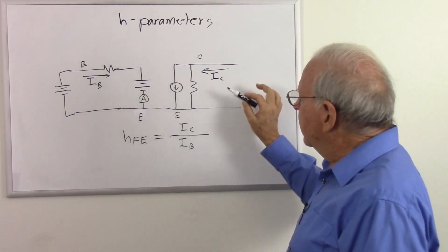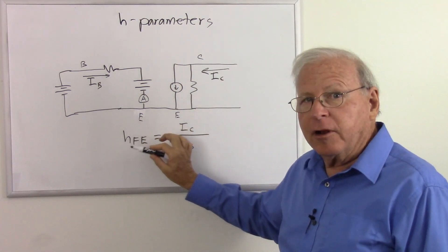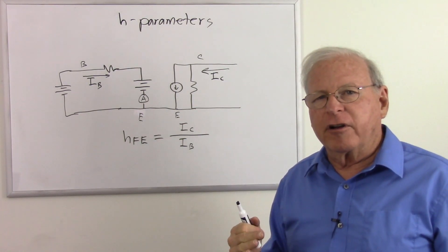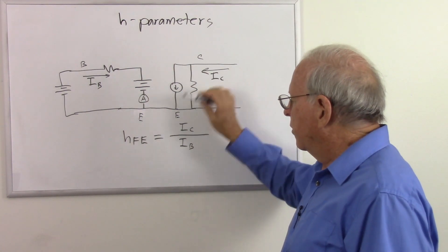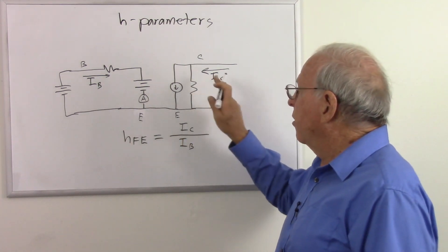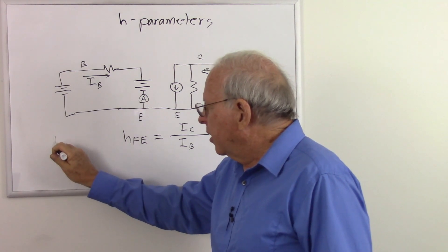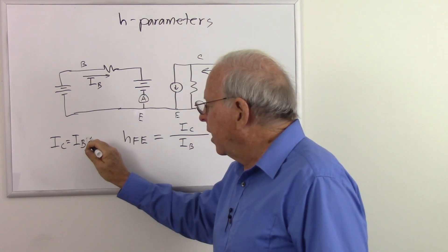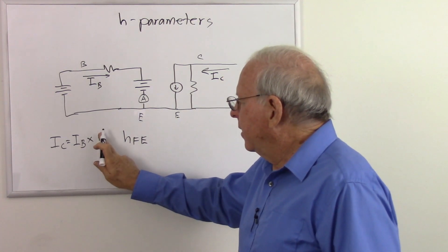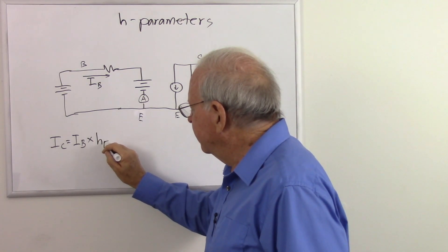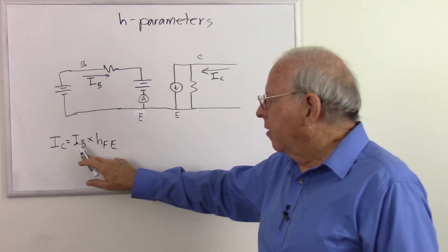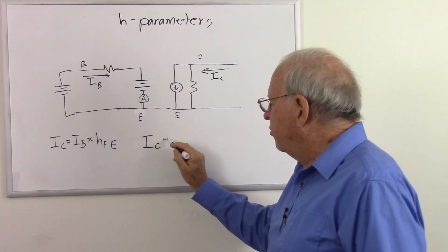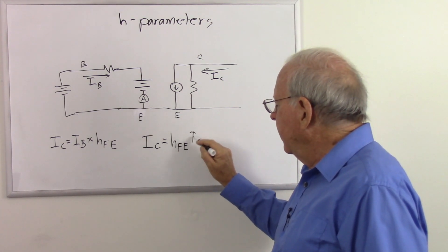HFE is going to equal our collector current divided by our base current. This is somewhat changeable because as we increase our collector current, HFE goes up a little bit. It's going to be specified at different amounts of collector current — some data sheets will show two, others five or six different collector currents and show you the HFEs for those. But that is the most important parameter of the transistor. So our collector current IC equals HFE times the base current IB.